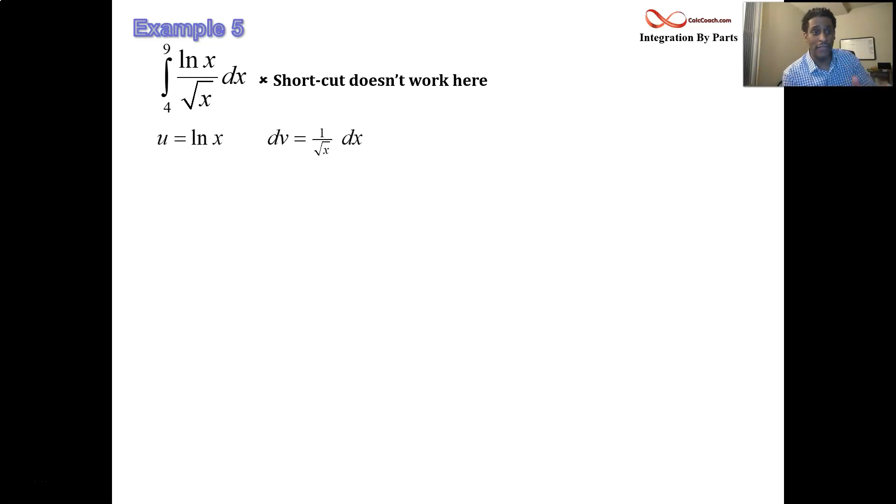But we do have the mnemonic that helps us figure out what to let u equal. Top of the list is logarithmic functions. We need to let u be equal to the natural log of x. Then we have dv being the rest of it, 1 over root x dx. What do you do to u? You take its derivative. What do you do to dv? You take its integral.